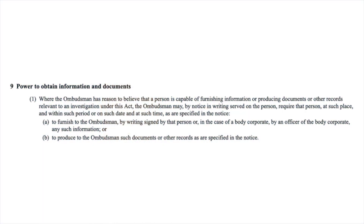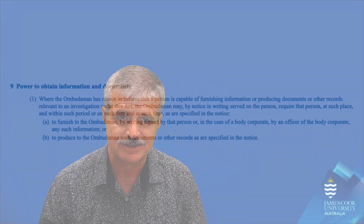Section 9 of the Ombudsman Act allows the Ombudsman to simply demand from any person — whether they're in the government or not — any information, any documents, and any records which are relevant to an investigation. Really broad powers.